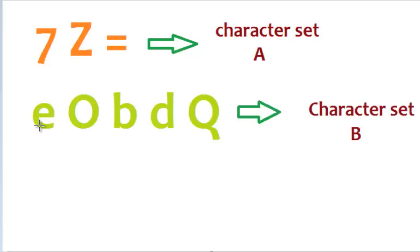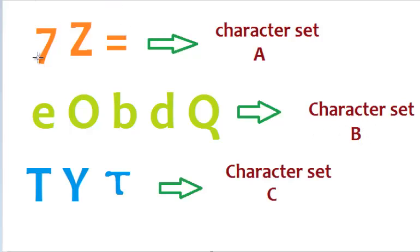Now, let us also observe that characters e, o, b, d, and q are also similar, so they can form character set B. And the rest of the characters t, y, and tau are also similar. They can be part of character set C.